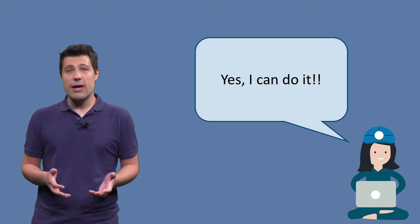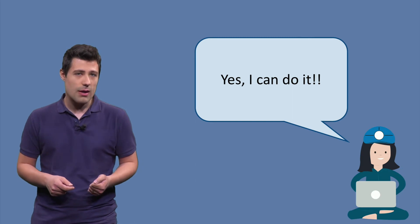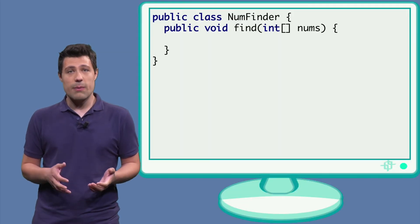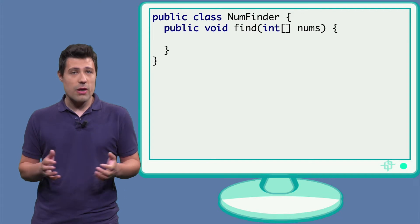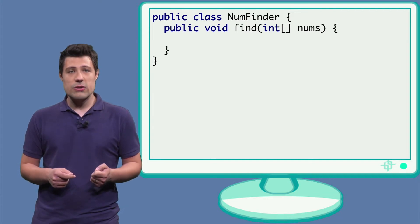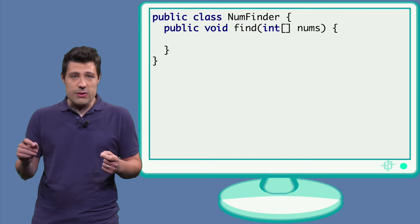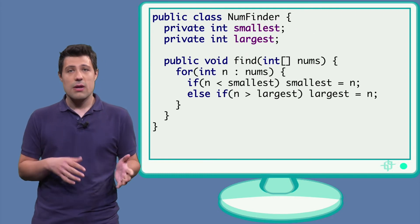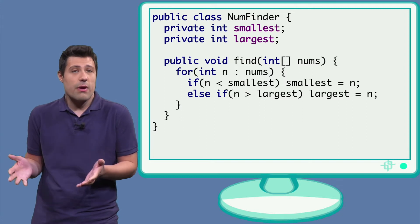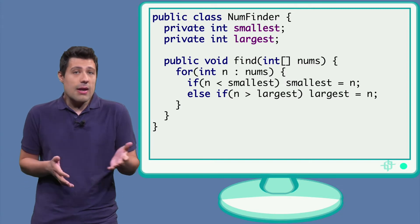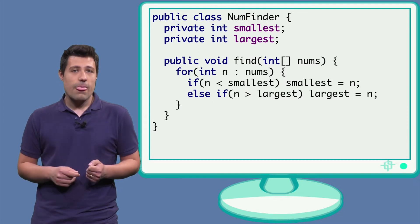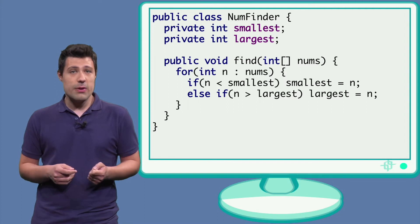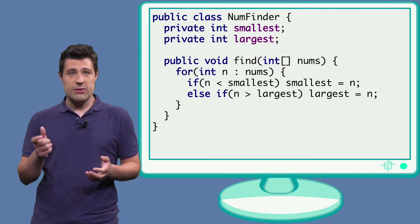So in Java, what I would do is, I would come up with a class, I'm going to call it numFinder. Then I would create this find method that receives an array of integers. And the first thing I would do is then go through all the elements of this list and store the smallest number in a variable and the largest number in another variable. If n is smaller than the smallest number we have seen, then we just replace it. And we do the same for the largest. If n is bigger than the largest, we just replace largest to n.